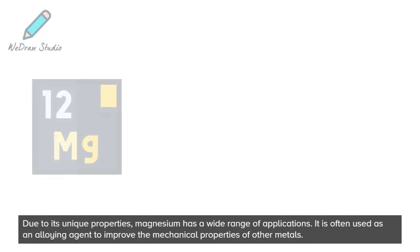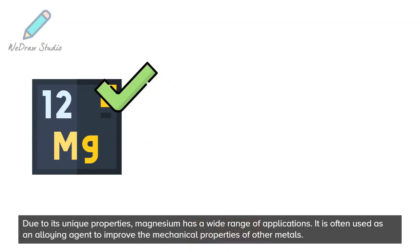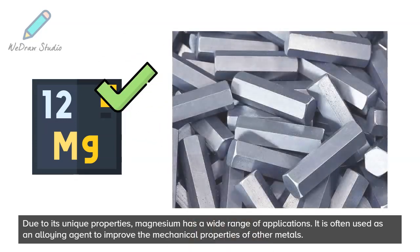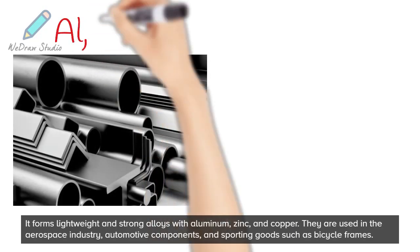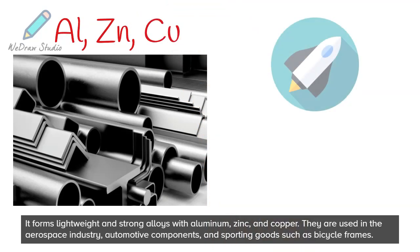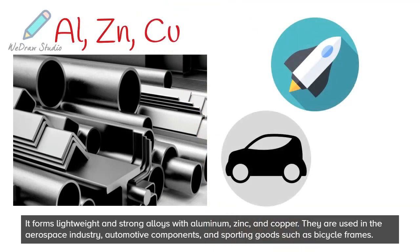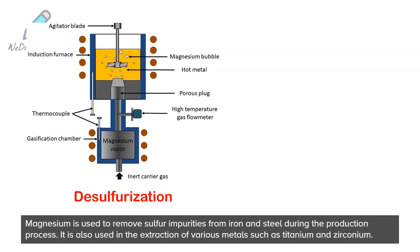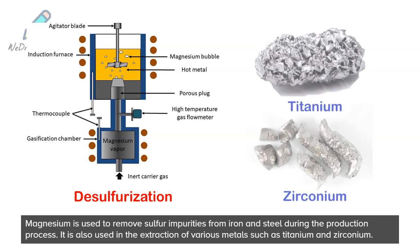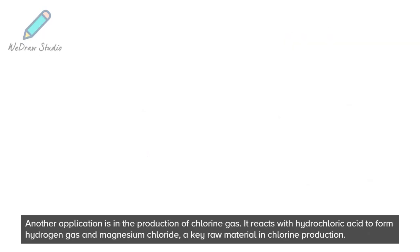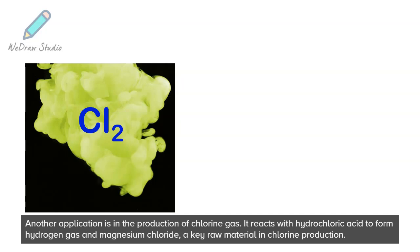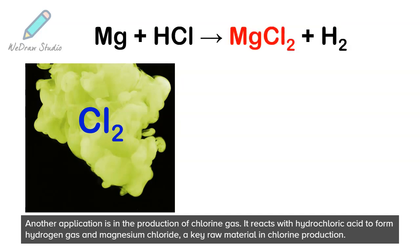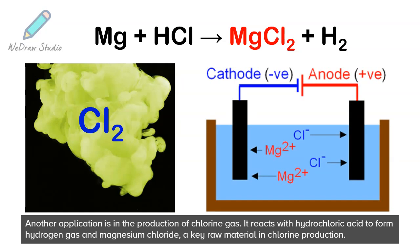Due to its unique properties, magnesium has a wide range of applications. It is often used as an alloying agent to improve the mechanical properties of other metals, forming lightweight and strong alloys with aluminum, zinc, and copper. These are used in the aerospace industry, automotive components, and sporting goods such as bicycle frames. Magnesium is also used to remove sulfur impurities from iron and steel during production, and in the extraction of metals such as titanium and zirconium. Another application is in the production of chlorine gas — it reacts with hydrochloric acid to form hydrogen gas and magnesium chloride, a key raw material in chlorine production.